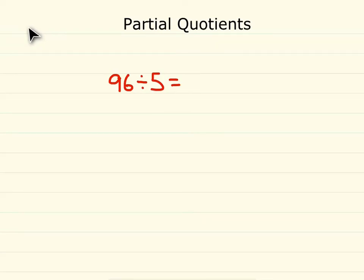This video is on partial quotients. Partial quotients is a neat way to do division. Let's pretend we had 96 jelly beans. We're going to divide them into 5 equal groups.